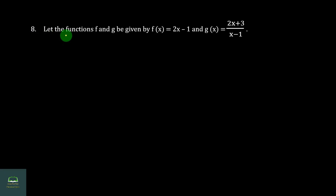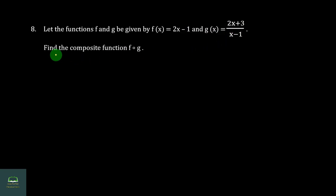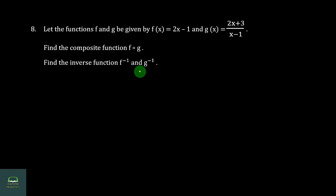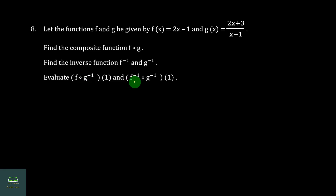Let the functions f and g be given by f(x) = 2x minus 1 and g(x) = (2x + 3) / (x minus 1). Find the composite function F∘G. Find the inverse functions f-inverse and g-inverse. Evaluate F∘G-inverse of 1 and F∘G-inverse of 1.